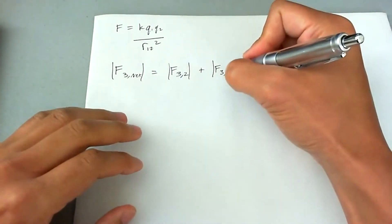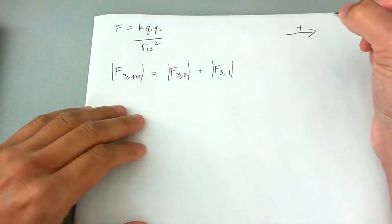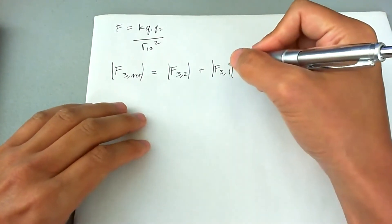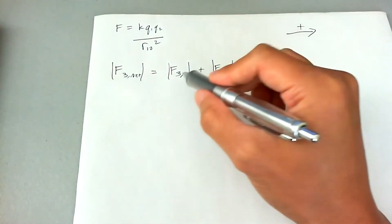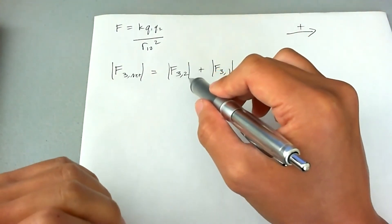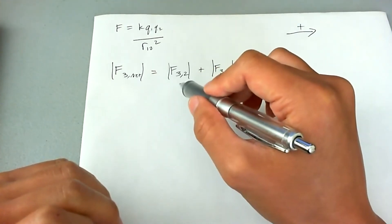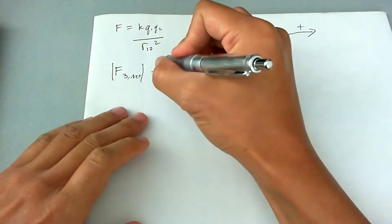So because of charge one, charge three is going to go in the positive direction. So we're going to make this positive and it actually ends up being positive. Because of charge two, however, charge three is going to go towards charge two because of the attraction. So it's going to be negative.